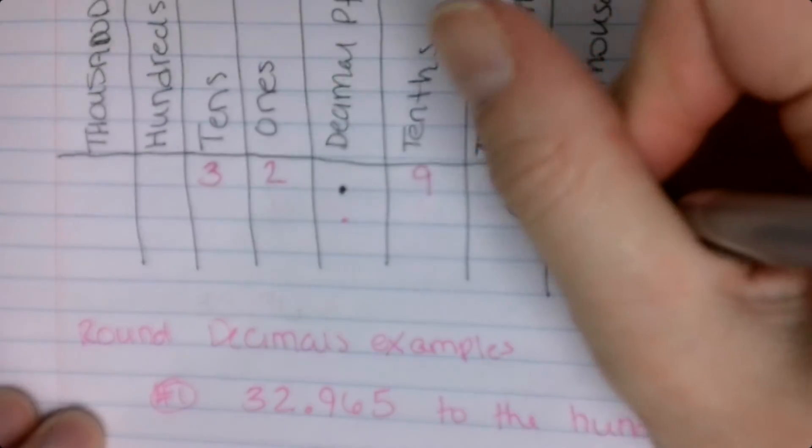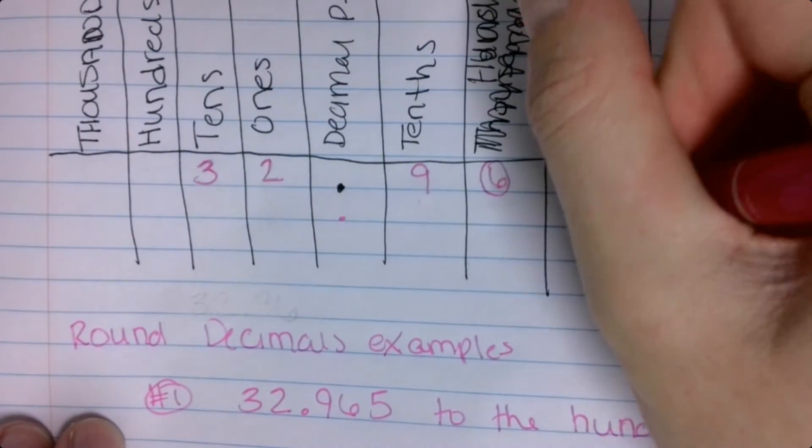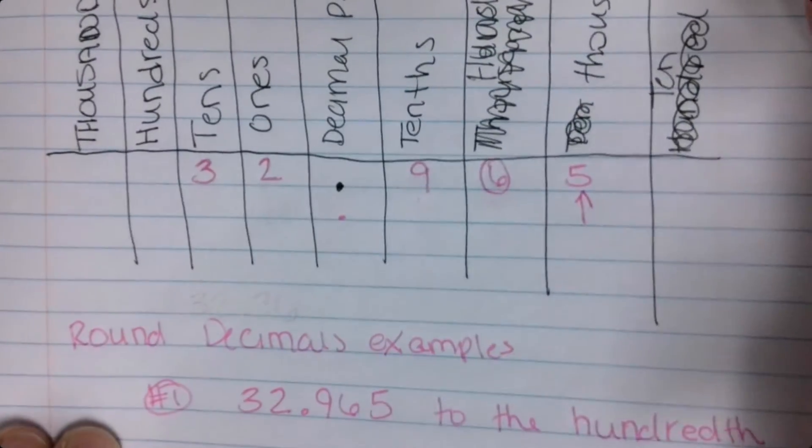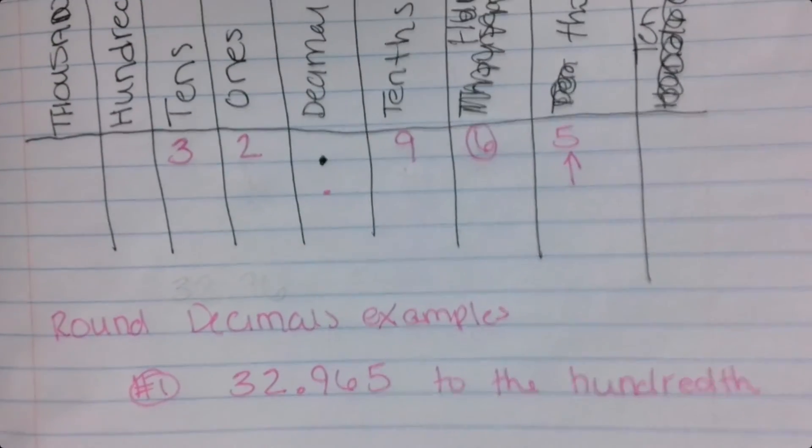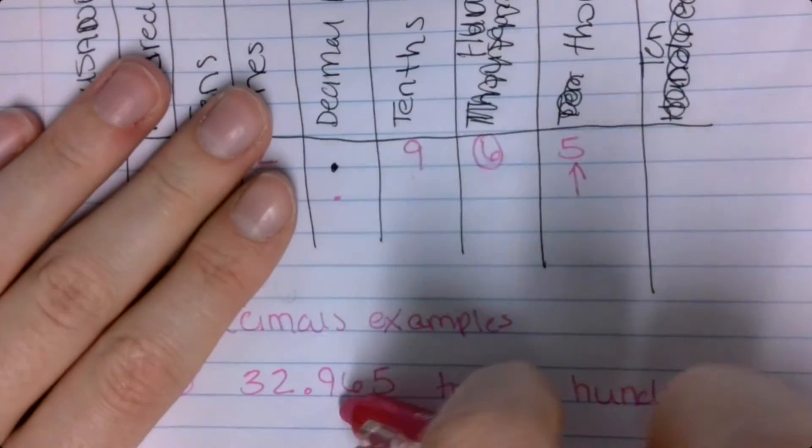So the hundredth is the six. The hundredth is the six, which means I'm going to look at that five. The hundredth is the six, which means I'm going to look at the five.